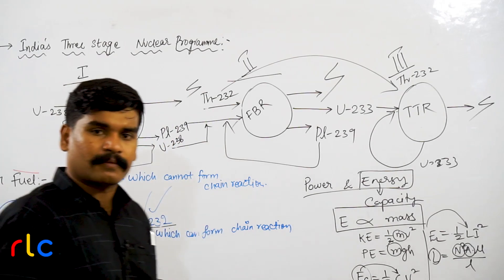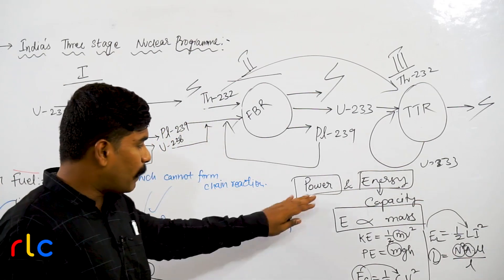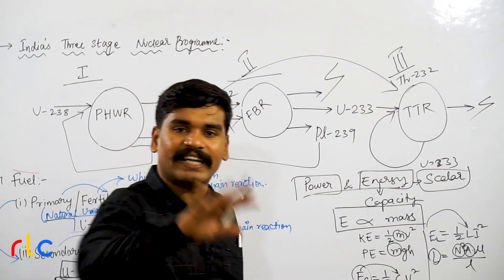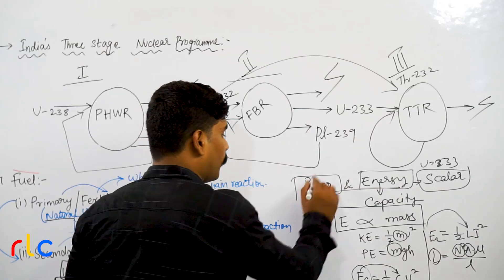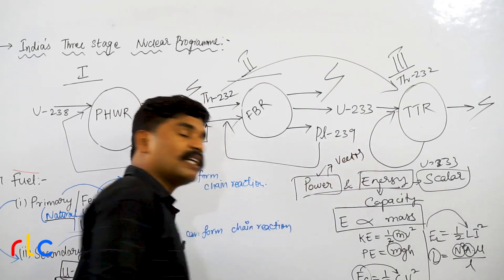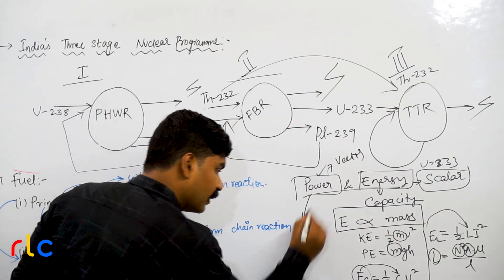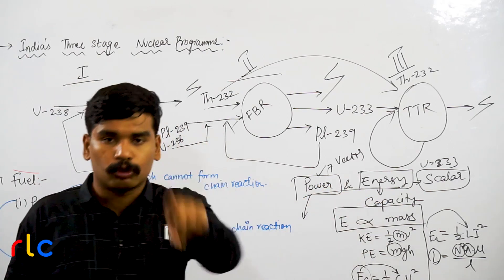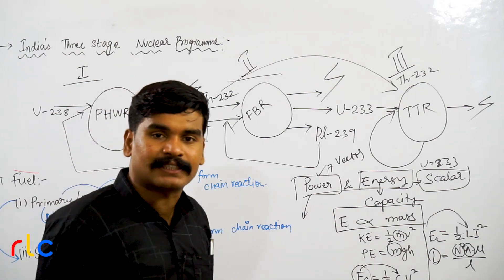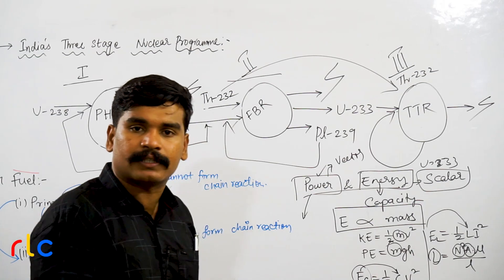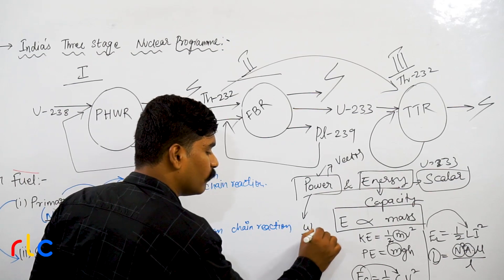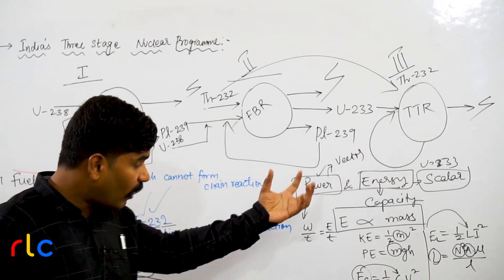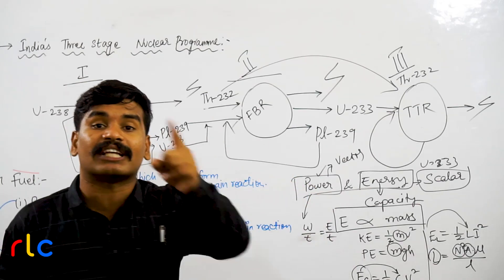Energy is a scalar quantity — it just has a value, no direction. Now, power I regard as a vector quantity because it has a direction. You are having energy, a capacity to do something. Power defines how fast you are able to utilize that energy — how fast you are able to transform it. Power is the rate of doing work, or rate of transforming energy, per unit time.